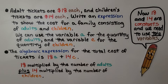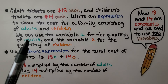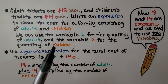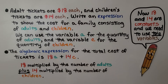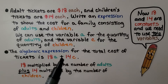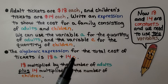An algebraic expression can have more than one constant and more than one variable. Adult tickets are $18 each and children's tickets are $14 each. Write an expression to show the cost for a family consisting of adults and children. We can use the variable a for the quantity of adults and the variable c for the quantity of children. The algebraic expression for the total cost of tickets is 18a plus 14c — 18 multiplied by the number of adults, plus 14 multiplied by the number of children. So 18 and 14 are constants and we need two variables.